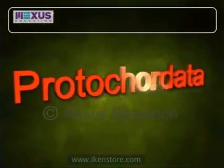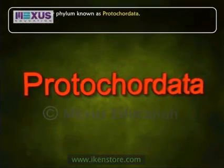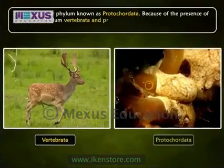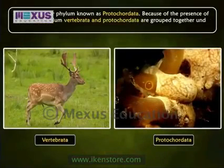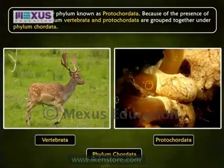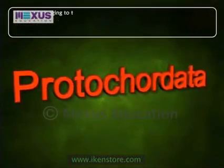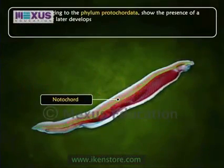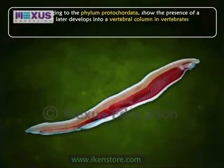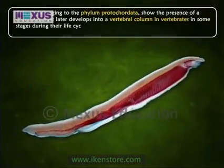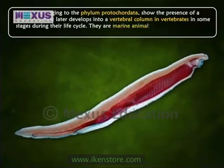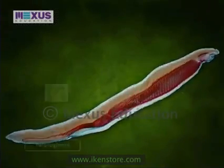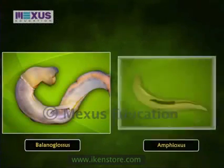There is another phylum known as Protochordata, named because of the presence of a notochord. Phylum Vertebrata and Protochordata are grouped together under Phylum Chordata. Animals belonging to Protochordata show the presence of a notochord that later develops into the vertebral column in vertebrates. In some stages during their life cycle they are marine animals and are bilaterally symmetrical. Examples are Balanoglossus, Amphioxus, etc.